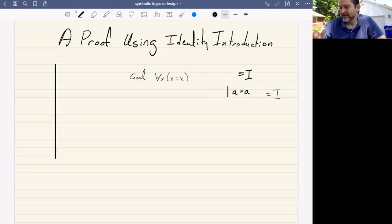So here we're asked to derive using identity introduction that X is identical, or that for all things X, they are identical to themselves. So how do we do that? Well, what we'll do is at step one here, notice we're given a Fitch bar,